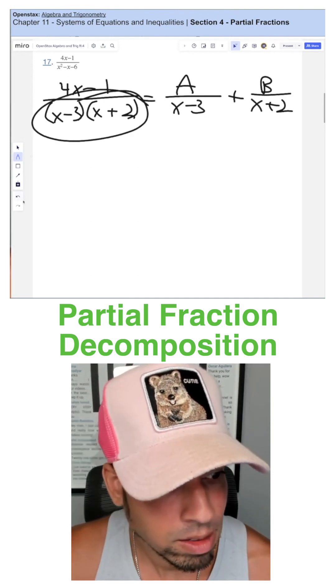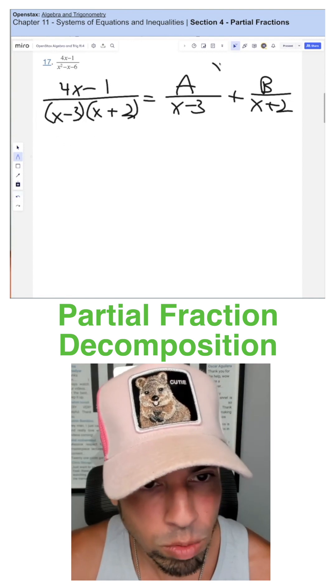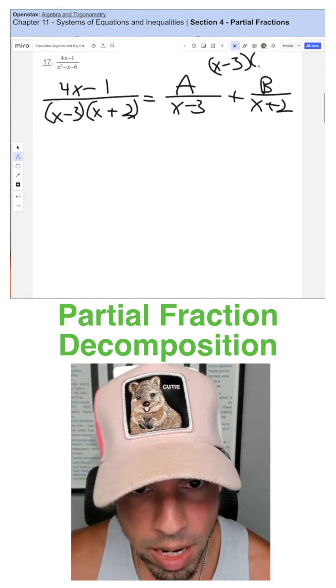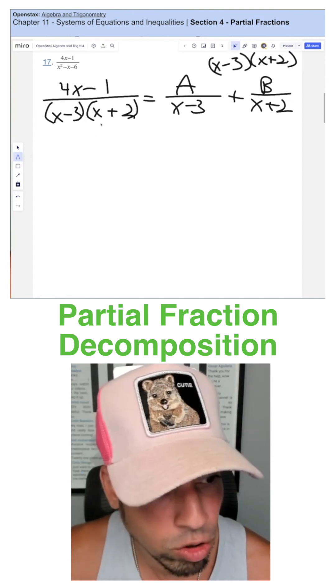Now we're going to multiply by this denominator here against both sides. We're going to multiply everything by x minus three times x plus two.